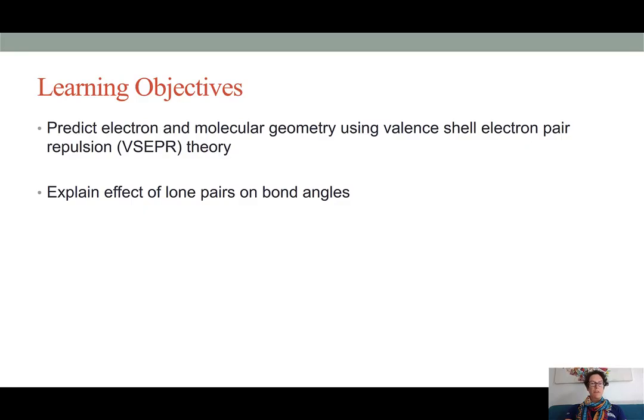The specific learning objectives that you should gain from watching this video and doing the assigned practice work is the ability to predict electron and molecular geometry using the valence shell electron pair repulsion theory. Along with that objective comes the idea of how lone pairs can affect the bond angles when we look at molecular geometry.